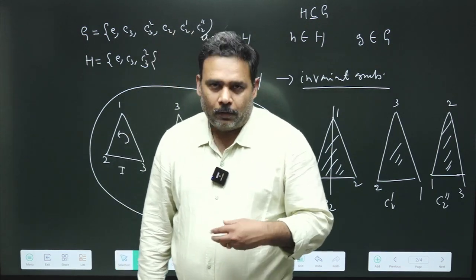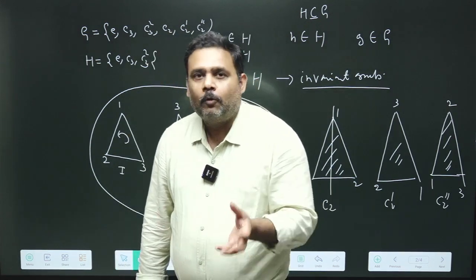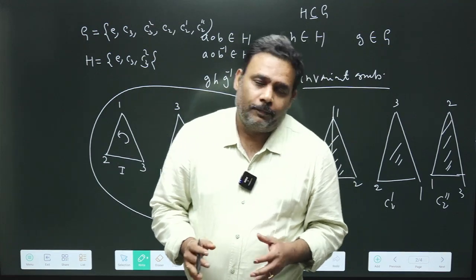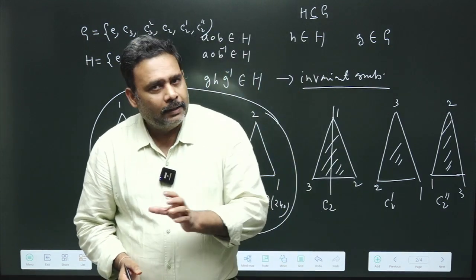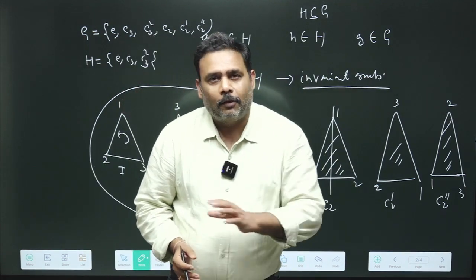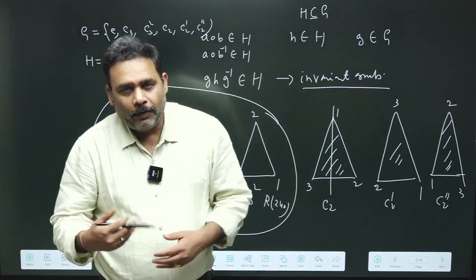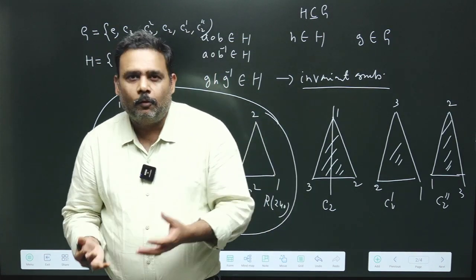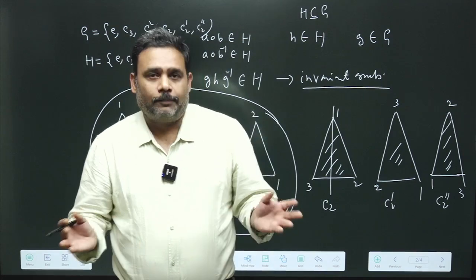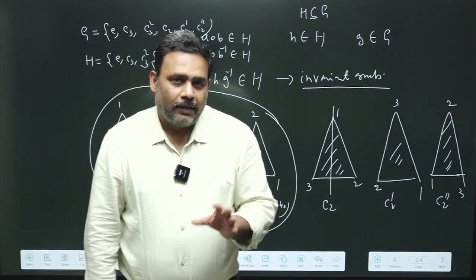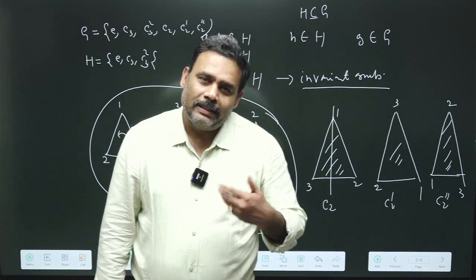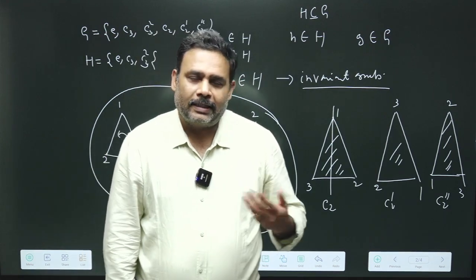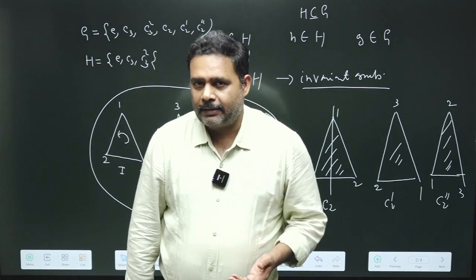You have to know whether some group is a subgroup of some bigger group or not — this is very important to understand different types of symmetries. For example, in the last videos we talked about the unitary group. You will see in the future that the special unitary groups SU(2) and SU(3) will be subgroups of this particular unitary group. This can easily explain different types of symmetries in particle physics as well as in quantum mechanics. Thank you.